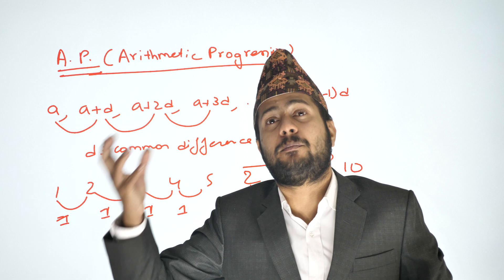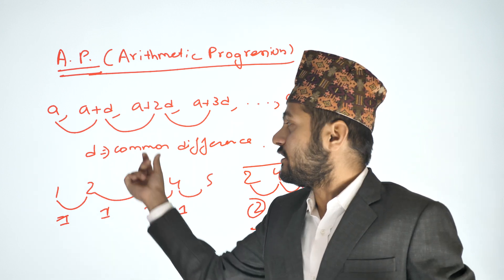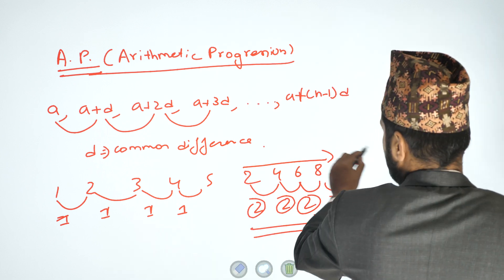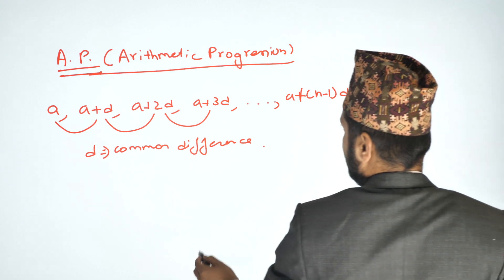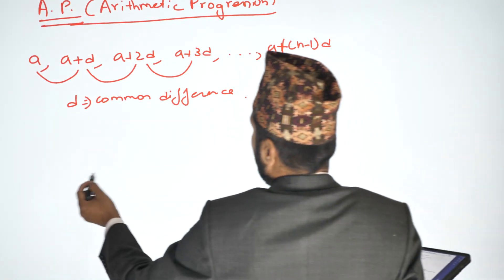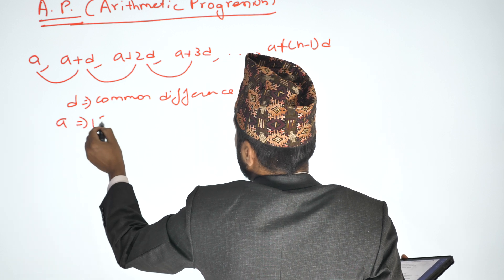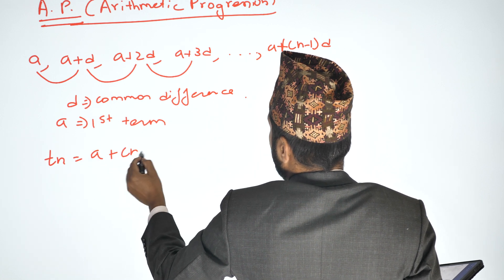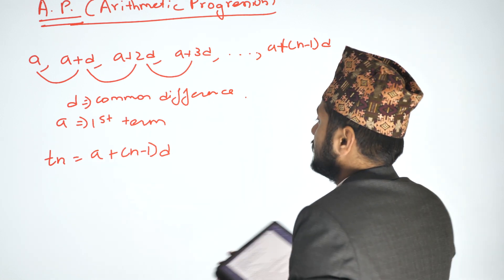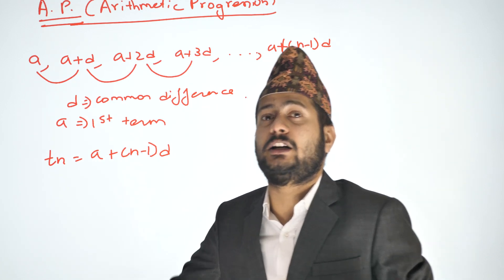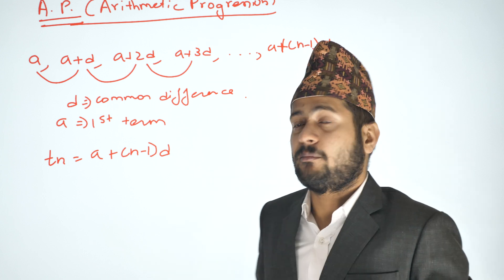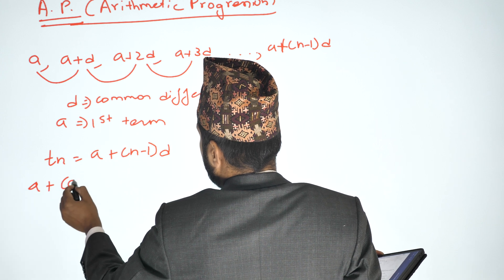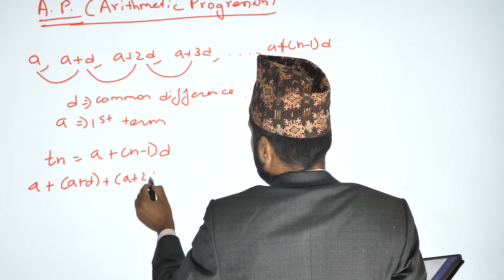For example, the sequence 1, 2, 3, 4, 5 has common difference 1 (2 minus 1 = 1, 3 minus 2 = 1). The sequence 2, 4, 6, 8, 10 has common difference 2 (4 minus 2 = 2, 6 minus 4 = 2). This constant difference is a key feature of arithmetic progression. We can find the 20th or 100th term using the formula a + (n−1)d.